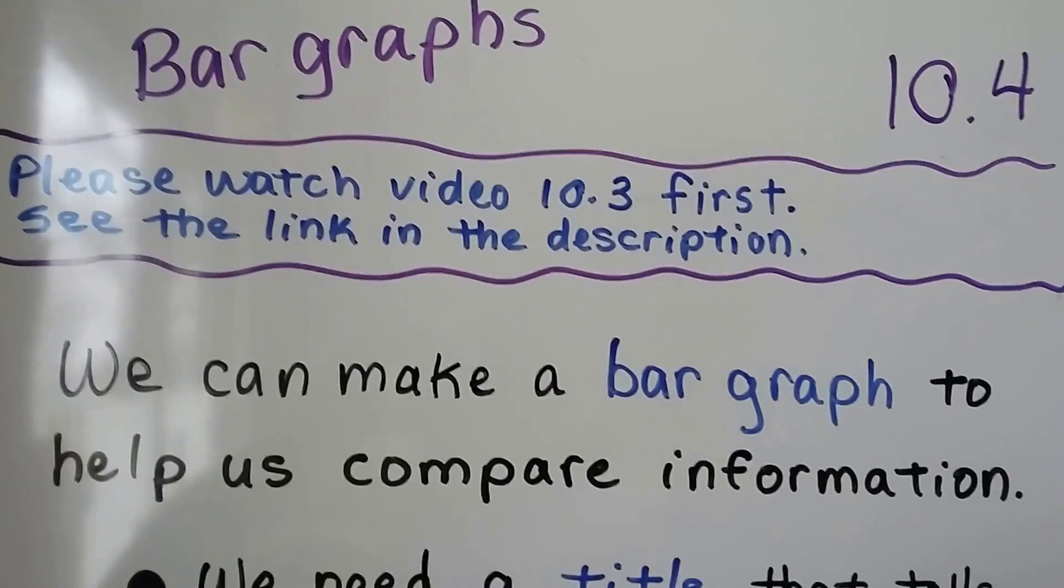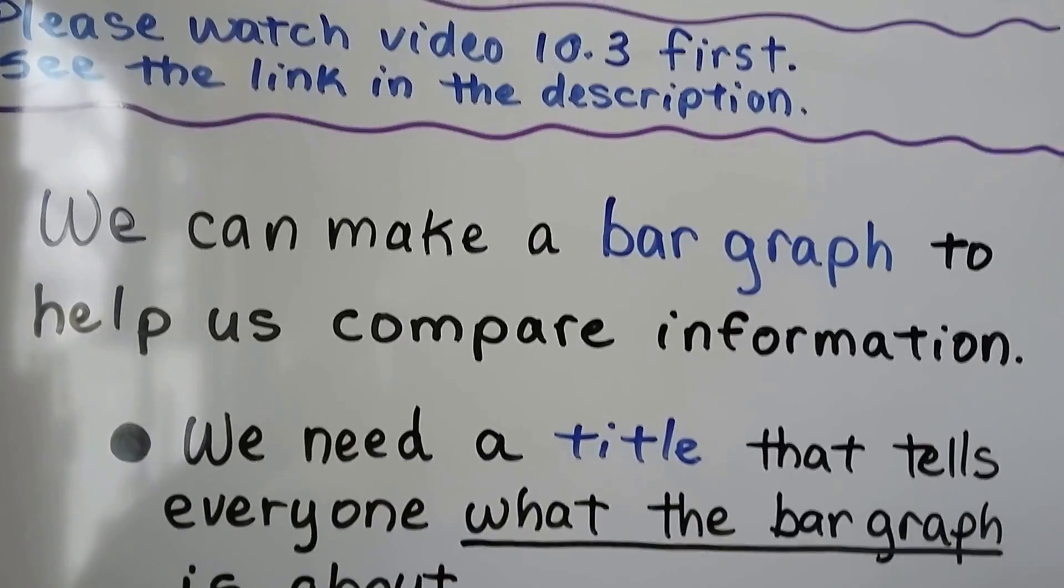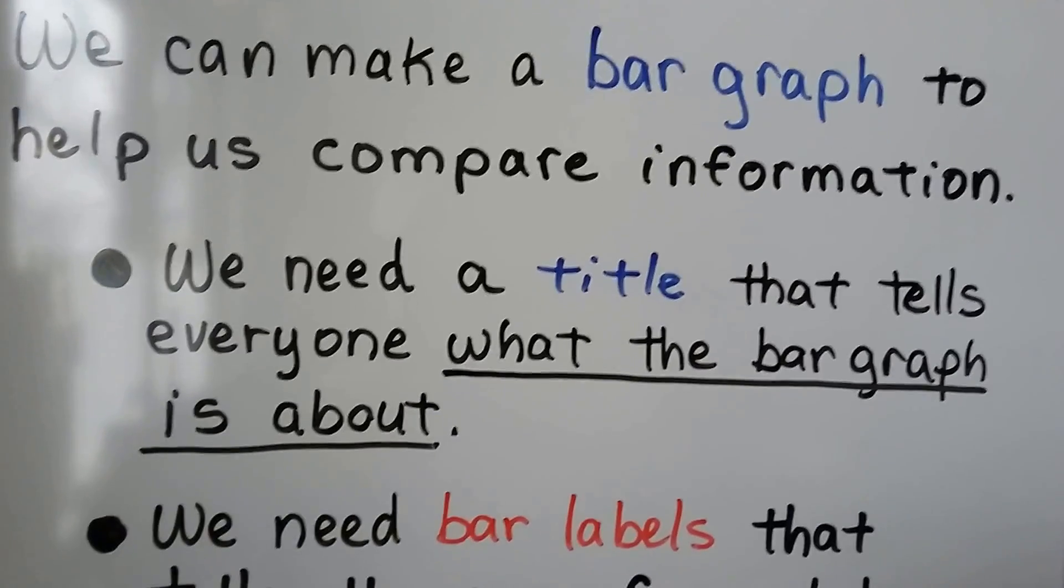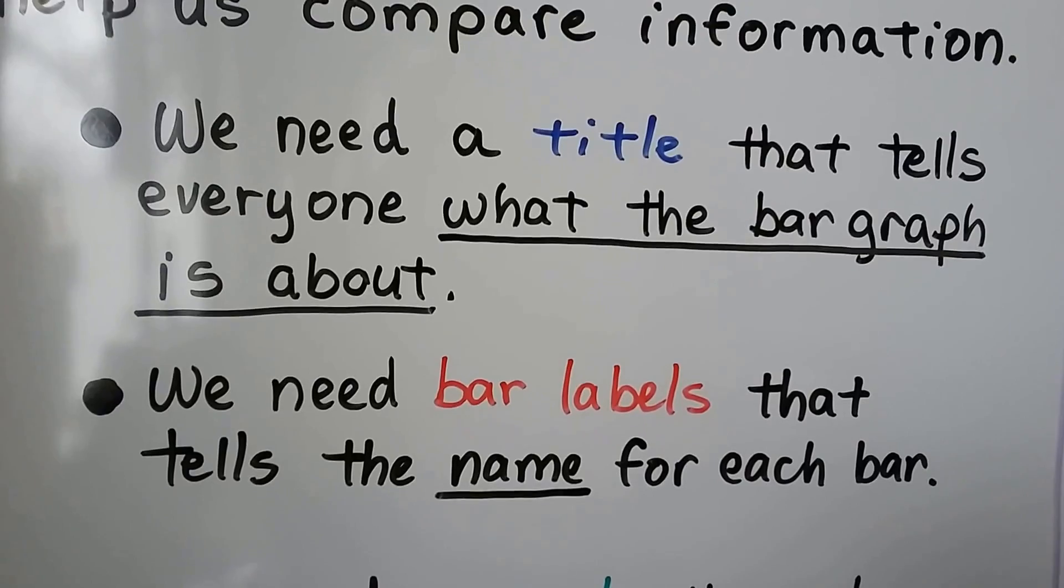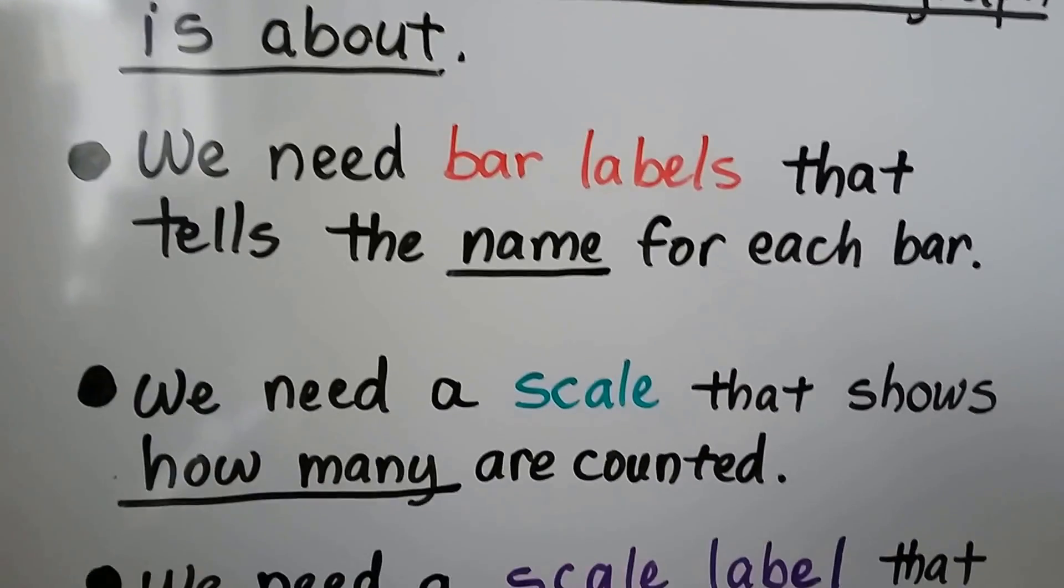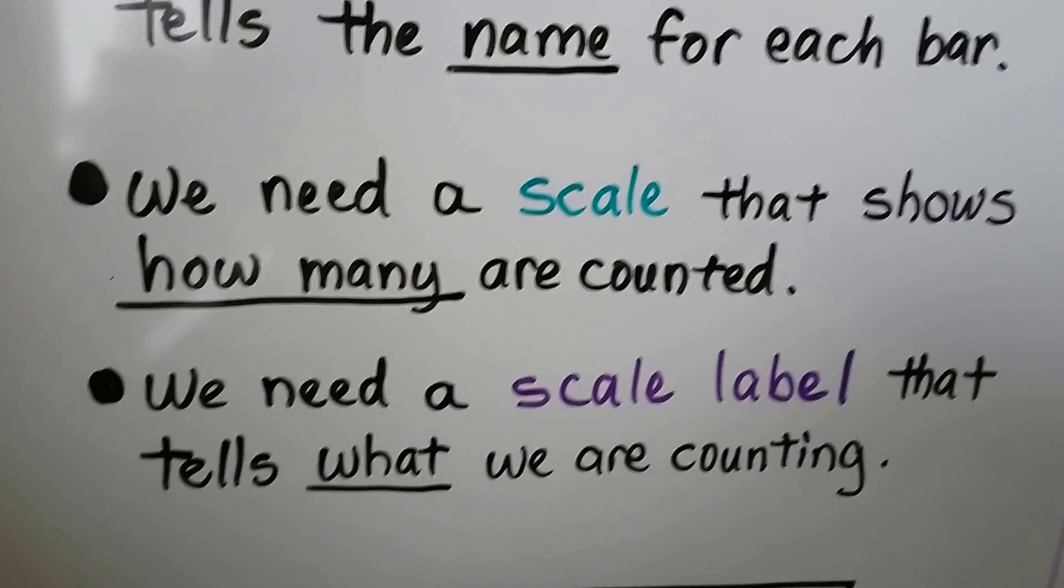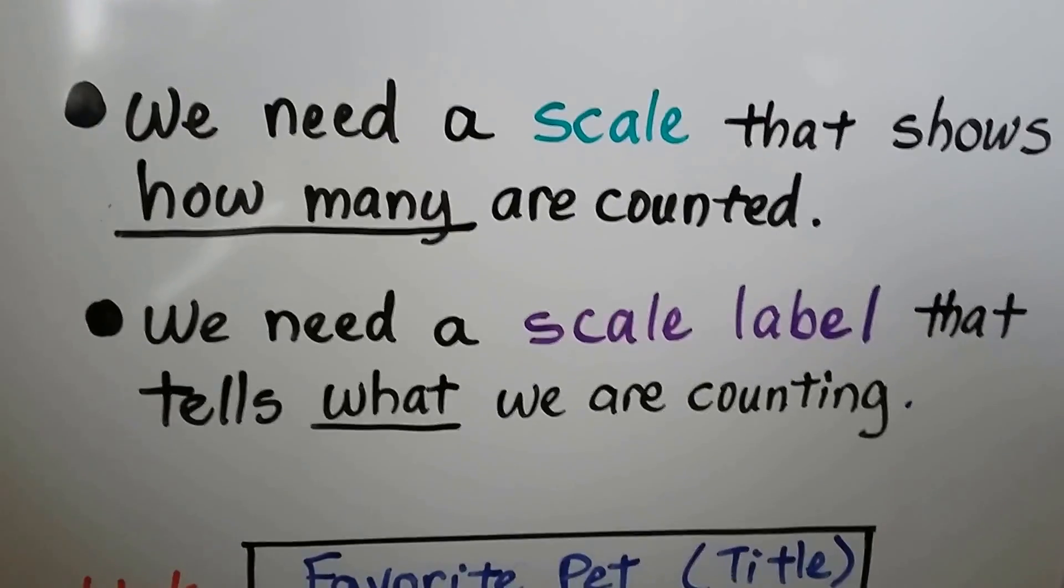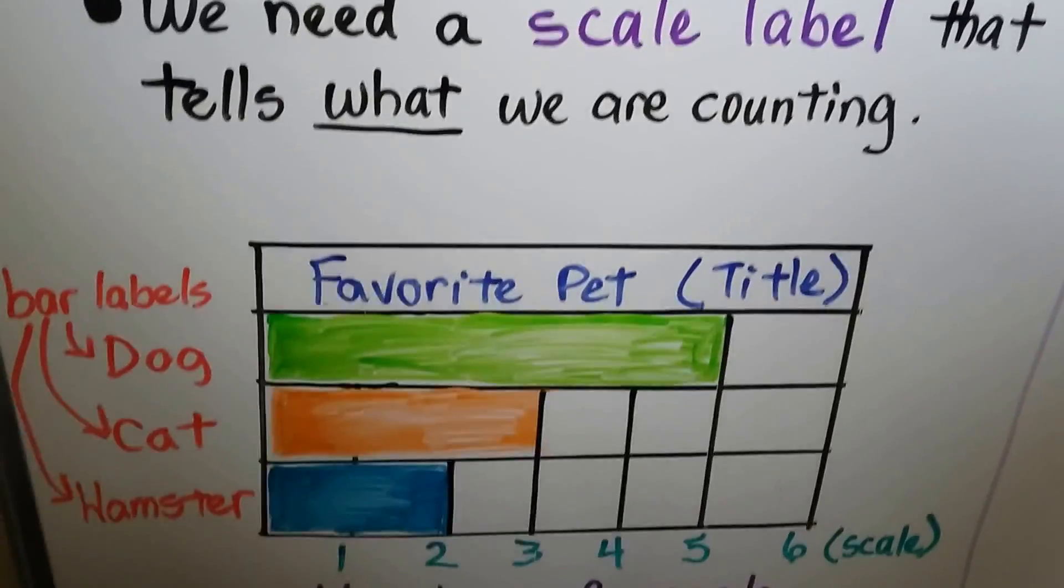We can make a bar graph to help us compare information. We need a title that tells everyone what the bar graph is about. We need bar labels that tell the name for each bar. We need a scale that shows how many are counted, and we need a scale label that tells what we are counting.